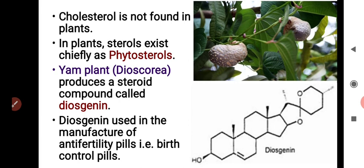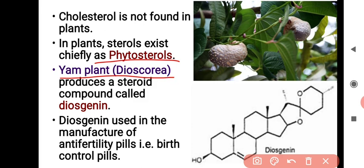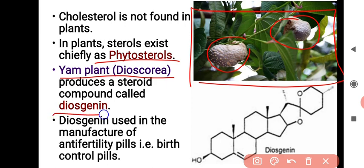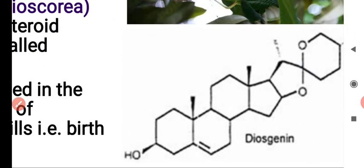In plants, steroids exist chiefly as phytosterols — 'phyto' means plant. Animals have cholesterol while plants have phytosterols. One example is dioscorea, a plant that contains phytosterols which produce a steroid known as diosgenin. Diosgenin is used in the manufacture of anti-fertility pills, that is, birth control pills. This is the chemical structure of diosgenin.